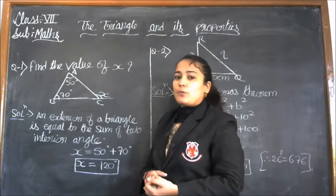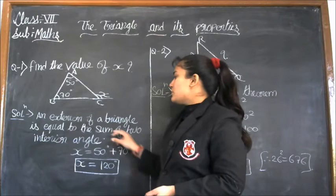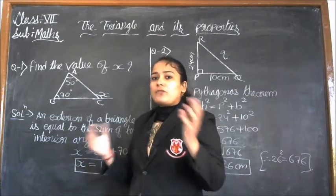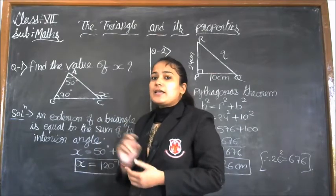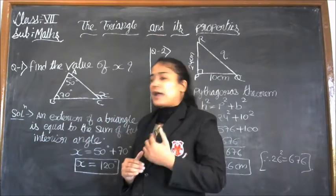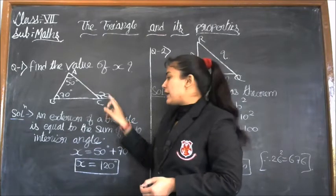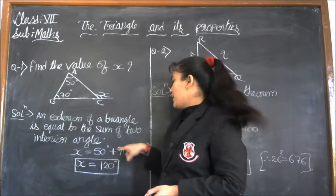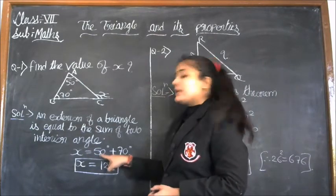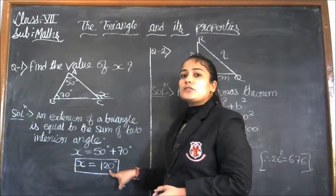We can find the exterior angle using the exterior angle property. The exterior angle of a triangle is equal to the sum of the two interior angles. So in this question, x equals 50 degrees plus 70 degrees.